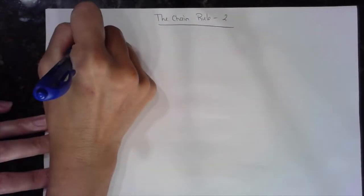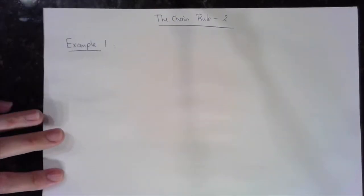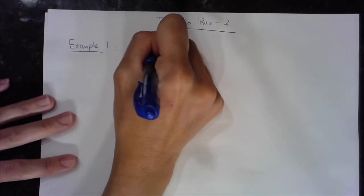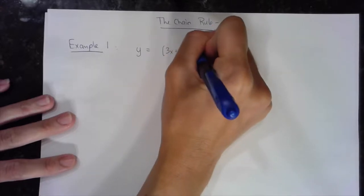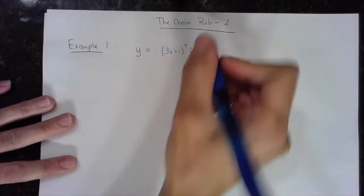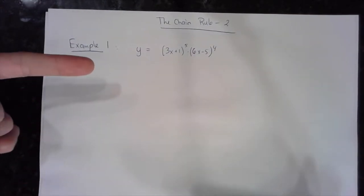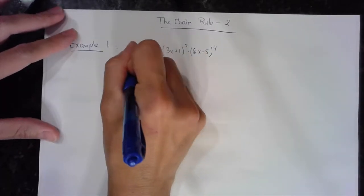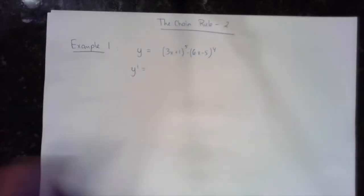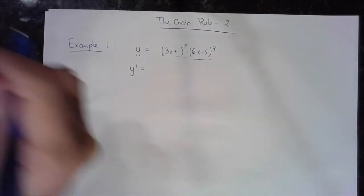I'm going to do some more examples of the chain rule, and now you're going to find the chain rule within a product rule or a quotient rule, so it becomes very interesting. Let's say that I have (3x + 1)^5 times (6x - 5)^4. I have the product of two functions, so the product rule is going to apply. When I derive these within the product rule, it's going to be a chain rule.